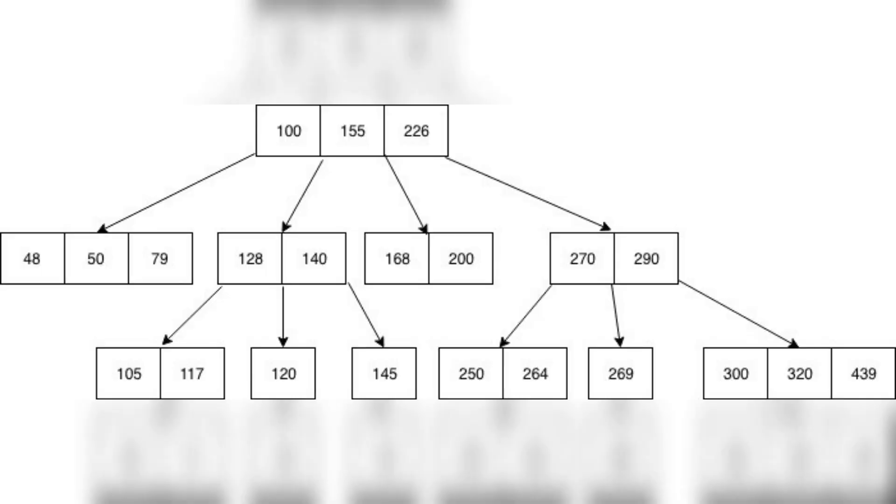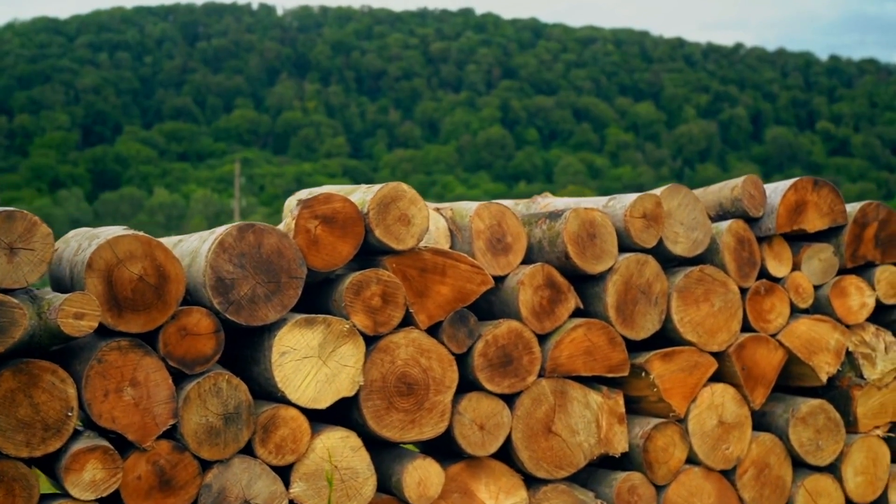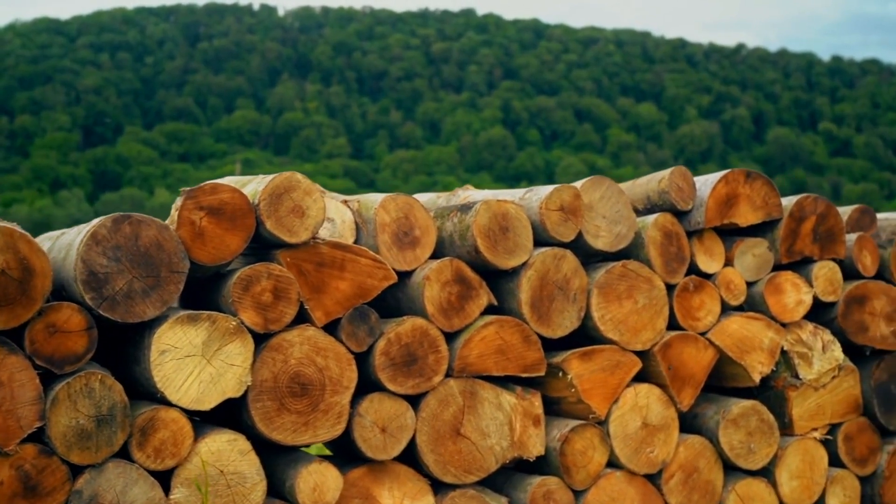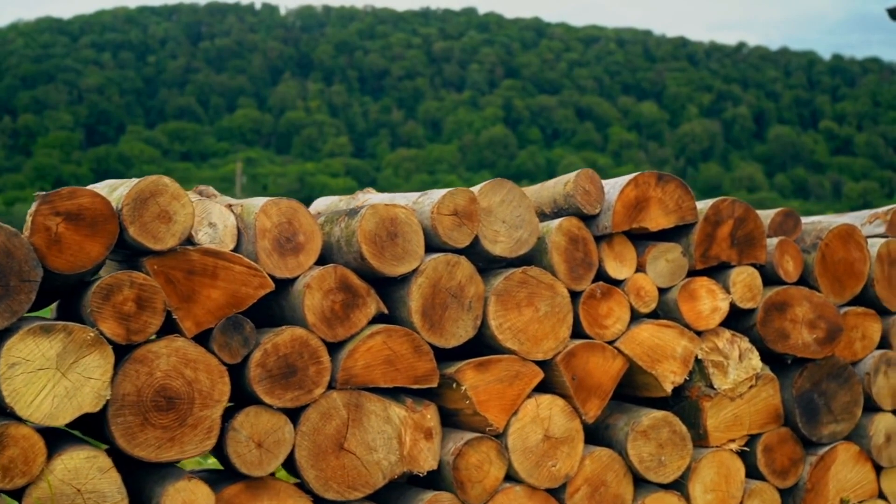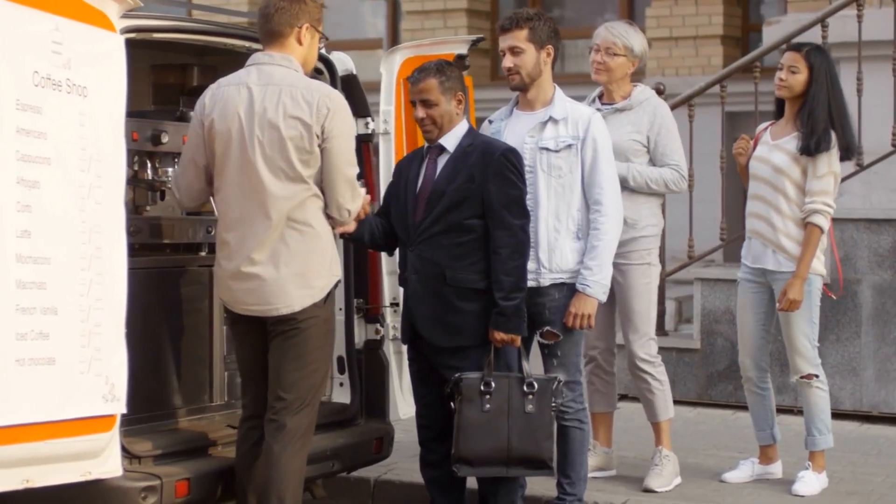Moving on, we encounter the B tree, an iconic and ever-reliable data structure frequently found in relational databases. With its self-balancing nature and multiple levels, B trees maintain sorted data on disk, making them a powerhouse for efficient range queries. When order matters, the B tree emerges as a steadfast choice.